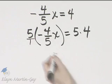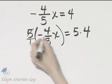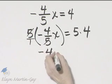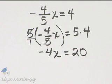This is, think of it as 5 over 1. The 5s divide out, and I have negative 4x is equal to 20. And then how do we finish solving?